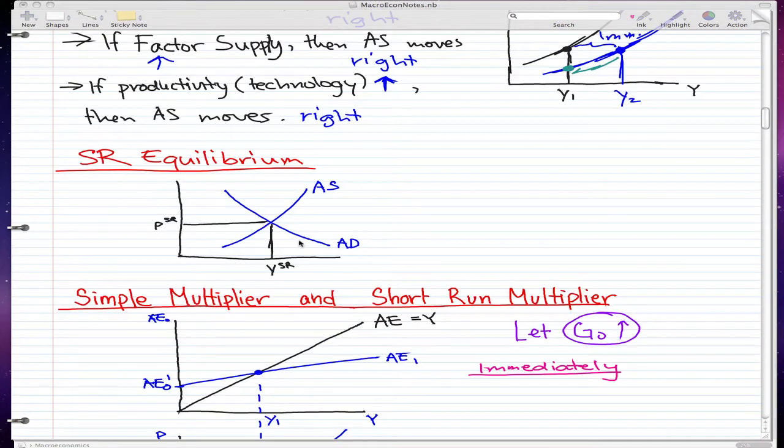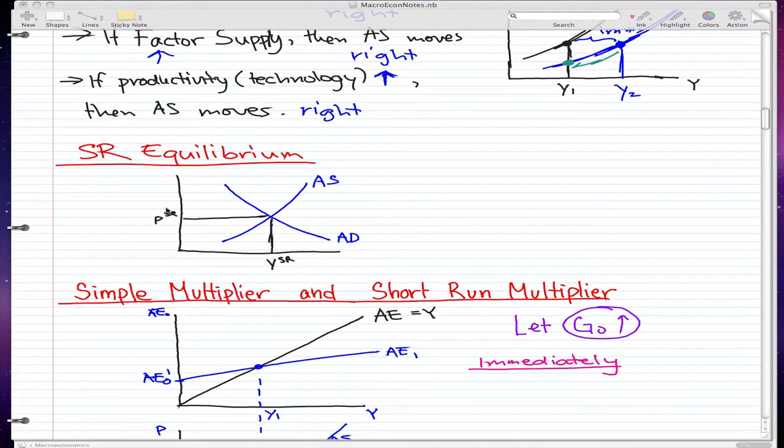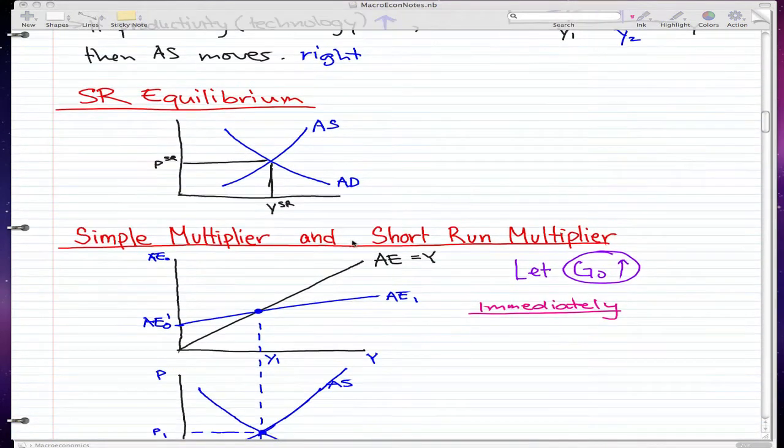I'm going to start you off with this graph for short run equilibrium, where the aggregate supply crosses the aggregate demand. We have price on the vertical line and income and output on the horizontal line. I want you to know that this graph is pretty much applicable to many graphs that we're going to go through in this video and the future video.